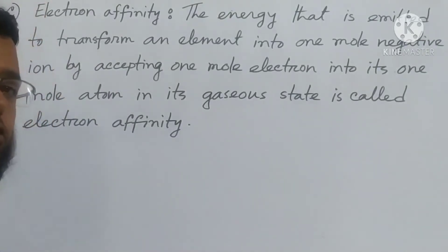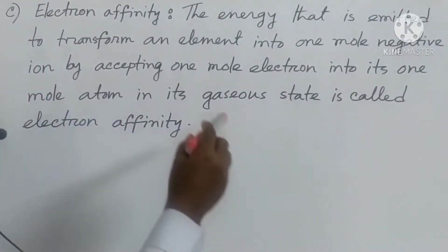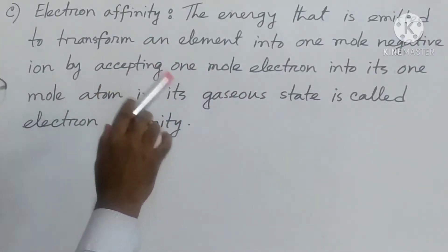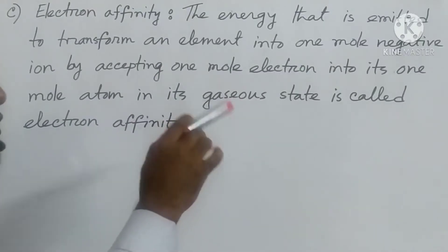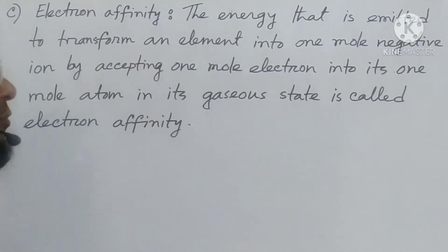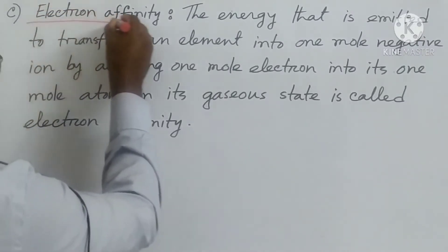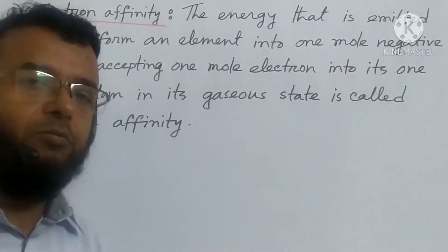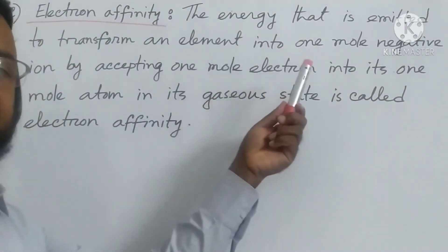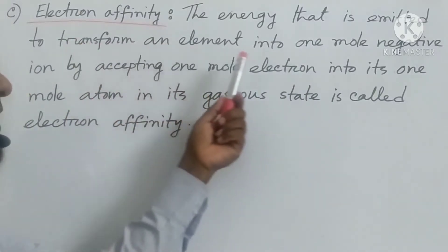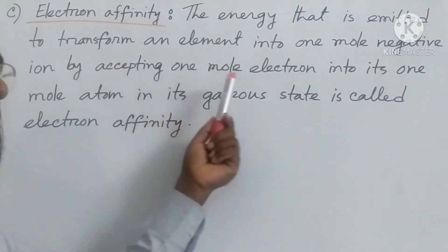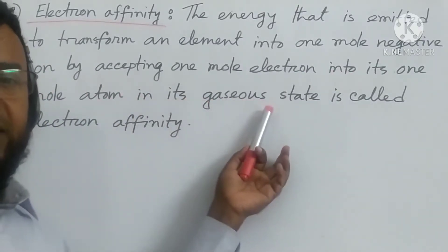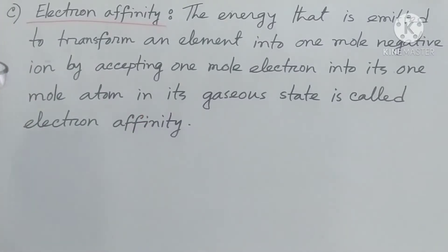Now number C. The question was about the electron affinity of Z element, which is chlorine — that is, the electron affinity of chlorine is more than that of fluorine. We have to explain. First, we need to know the knowledge base: what is electron affinity? The energy that is emitted to transform an element into 1 mol negative ion by accepting 1 mol electron by its 1 mol atom in its gaseous state is called electron affinity.